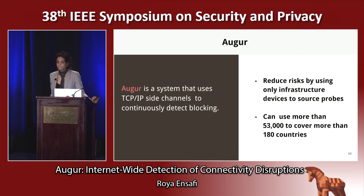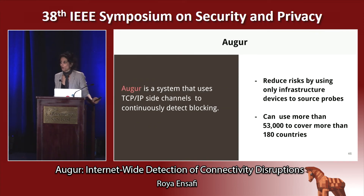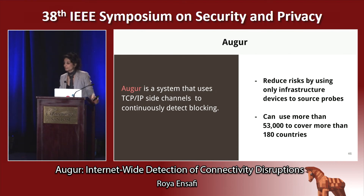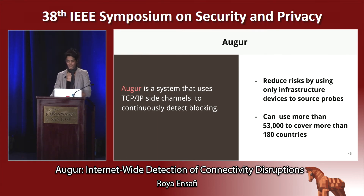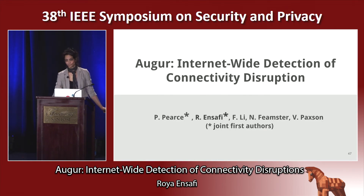To summarize, Augur is a system that uses a TCP/IP side channel to measure connectivity disruption globally and continuously. Thank you, and I'm open to questions.